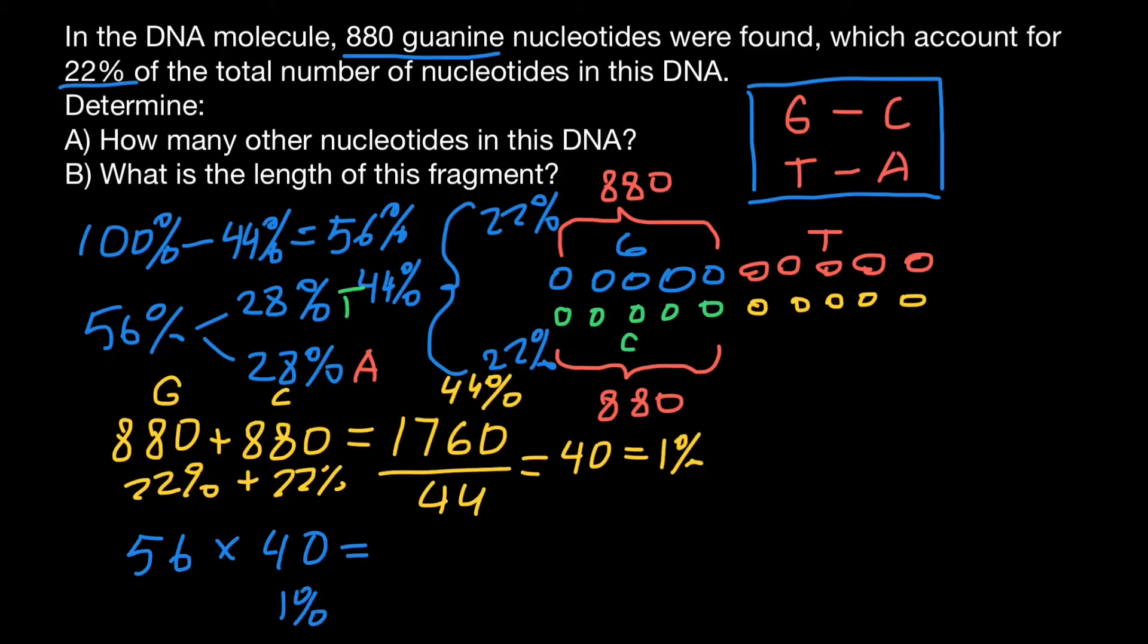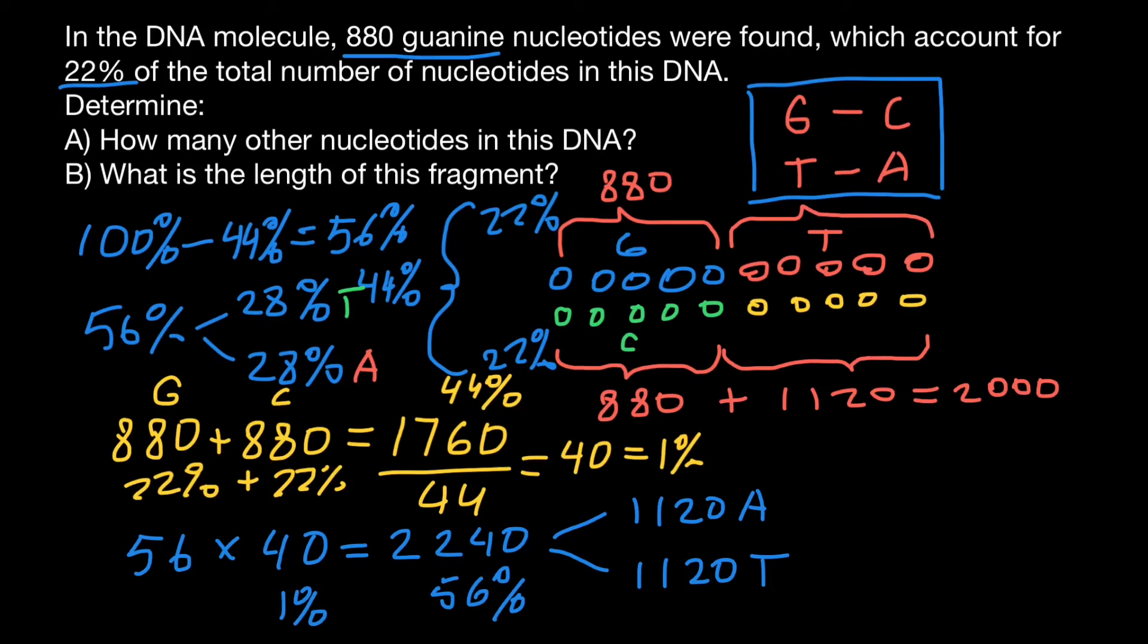And we are going to get 2240, which stands for the 56%. And half of this, which is going to be 1,120, is going to be adenine. And another half, 1,120, would be thymine. Let's put these numbers here, 1,120. Together, this is going to be 2,000 bases. And of course, because adenine base pairs with thymine, we are going to have the same number of thymines, which is 1,120.